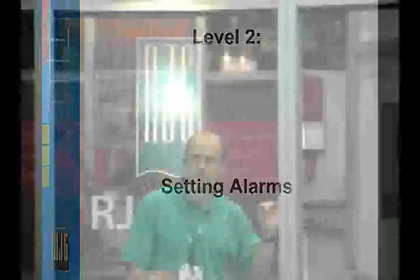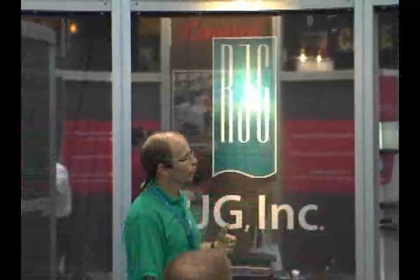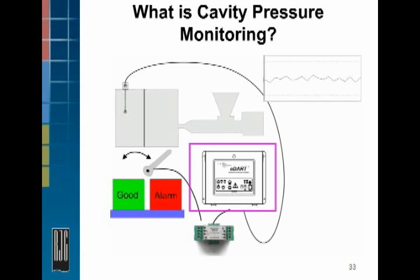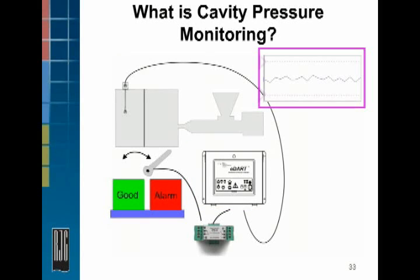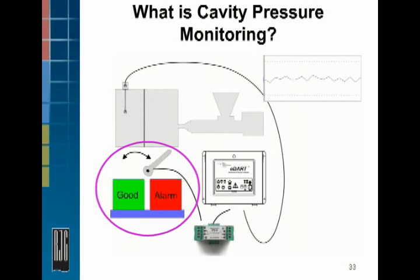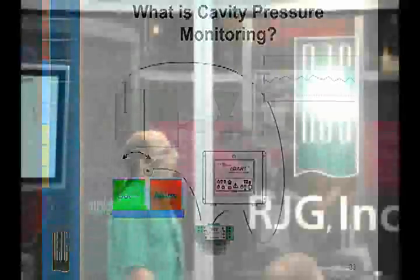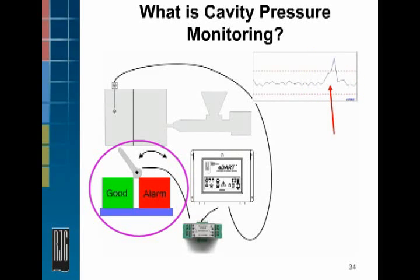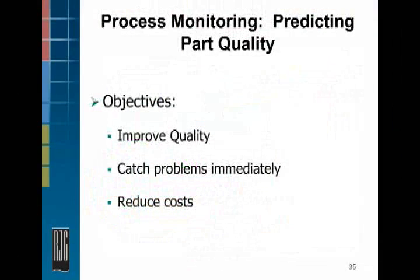Now let's talk about setting process alarms, where DOE can help us as well. Typically with cavity pressure, we've got a sensor in the mold gathering cavity pressure data and feeding back to the EDART. The EDART is plotting data, and we've got upper and lower alarm limits based on peak cavity pressure. Everything running within alarm limits sends a contact closure to tell the part diverter to send parts into the good bin. When a bad part goes outside the alarm limit, the EDART sends a contact closure telling parts to go into the reject bin — automatically keeping short shots and flash from going to the customer. This improves quality, catches problems immediately, and automates inspection to reduce costs.